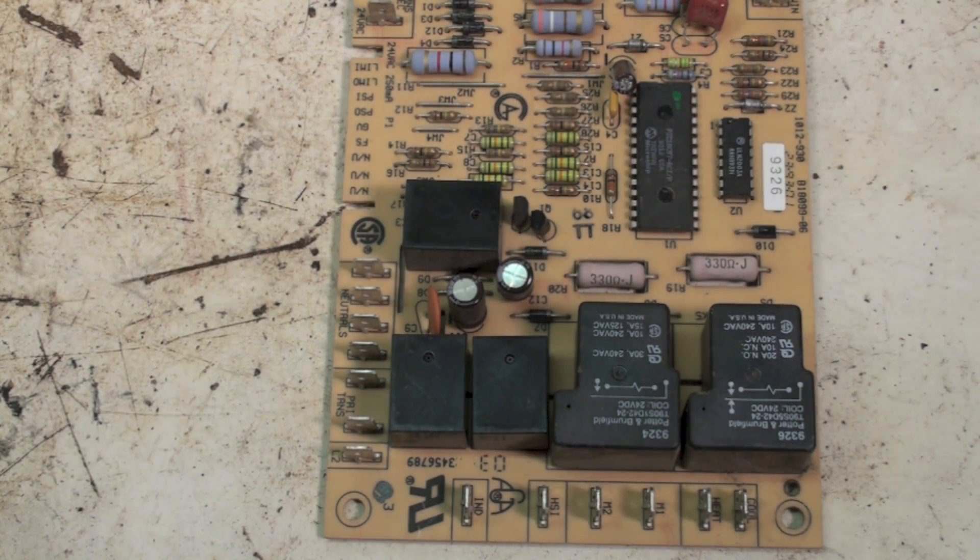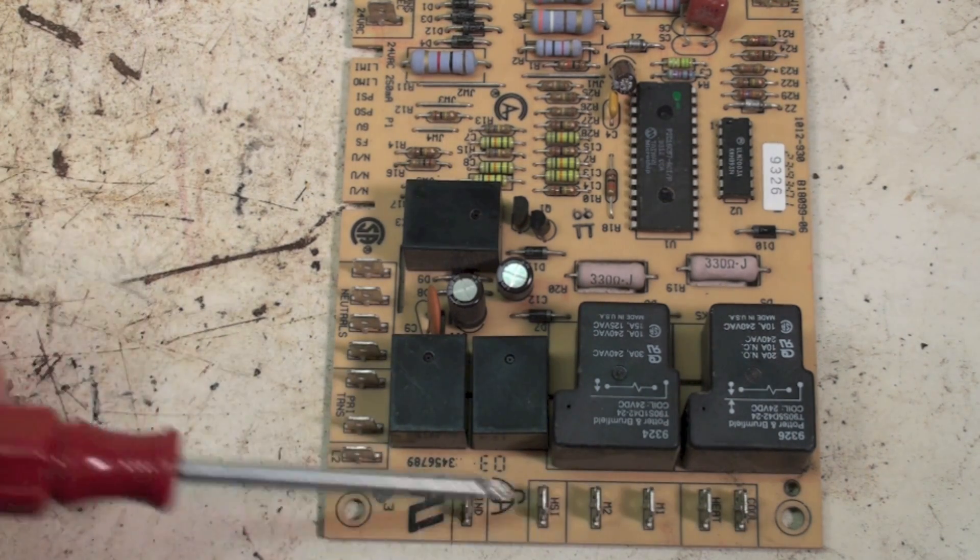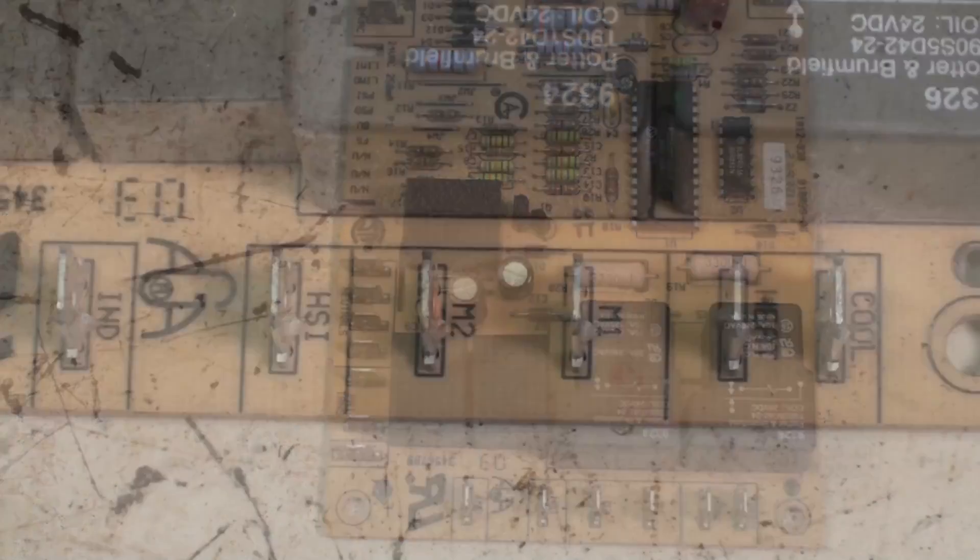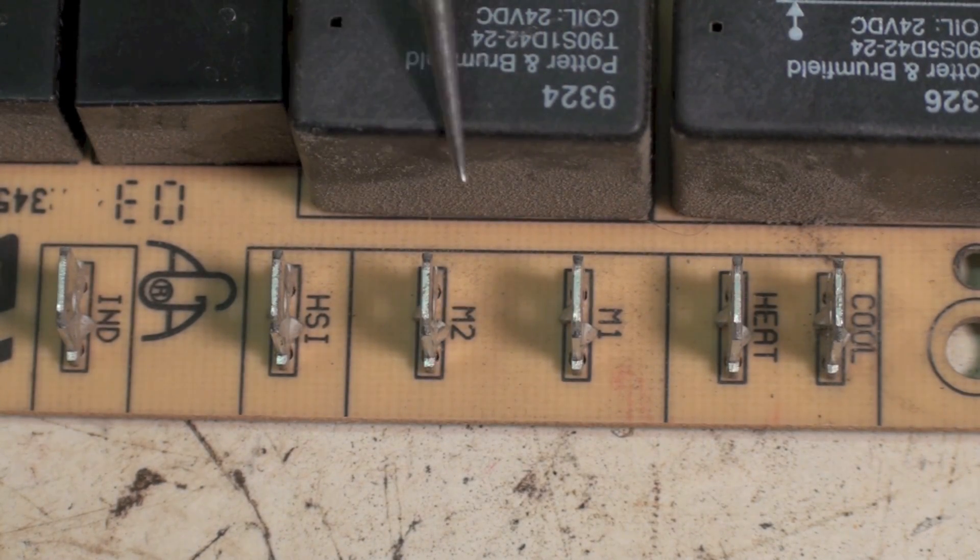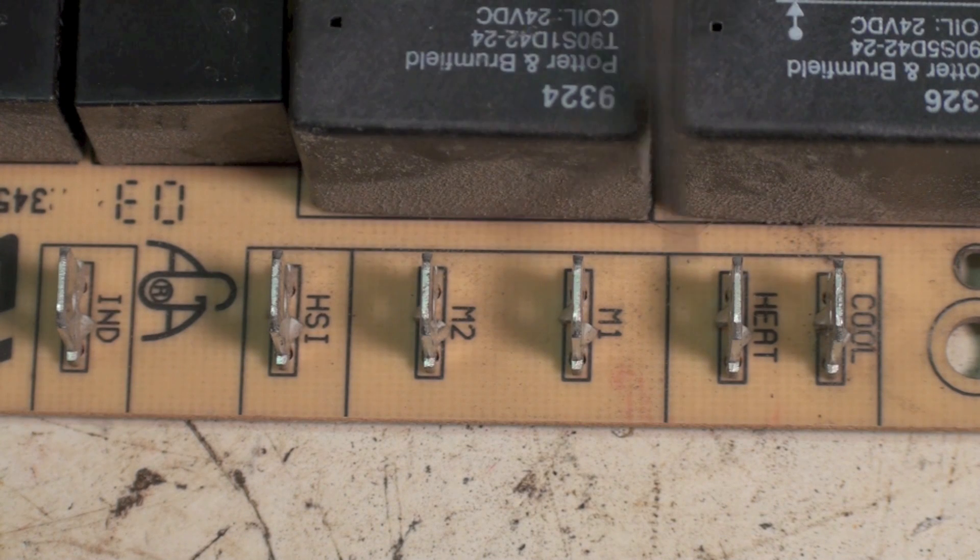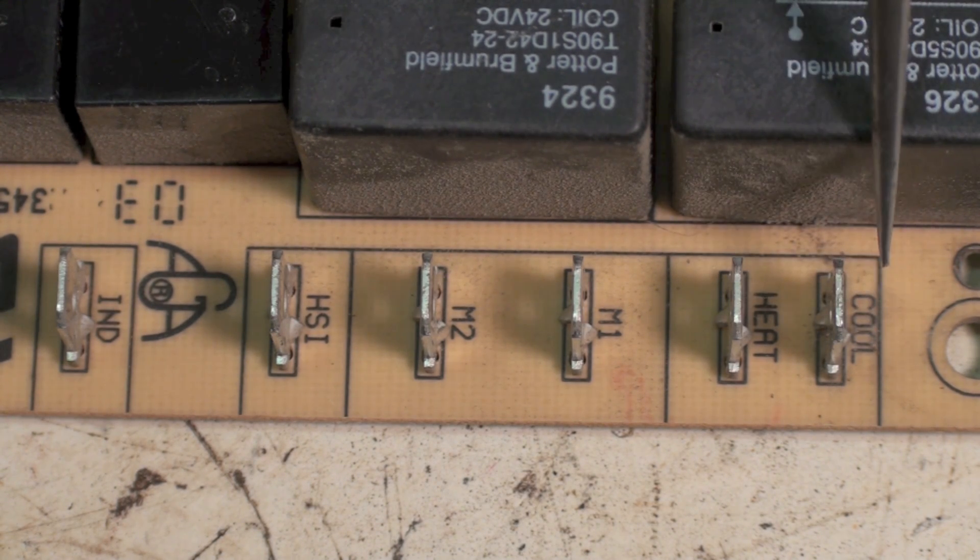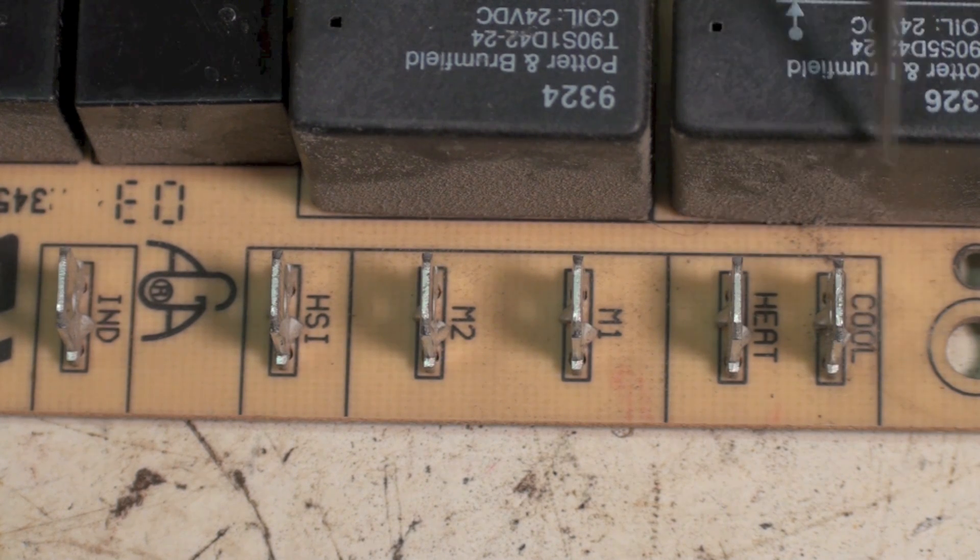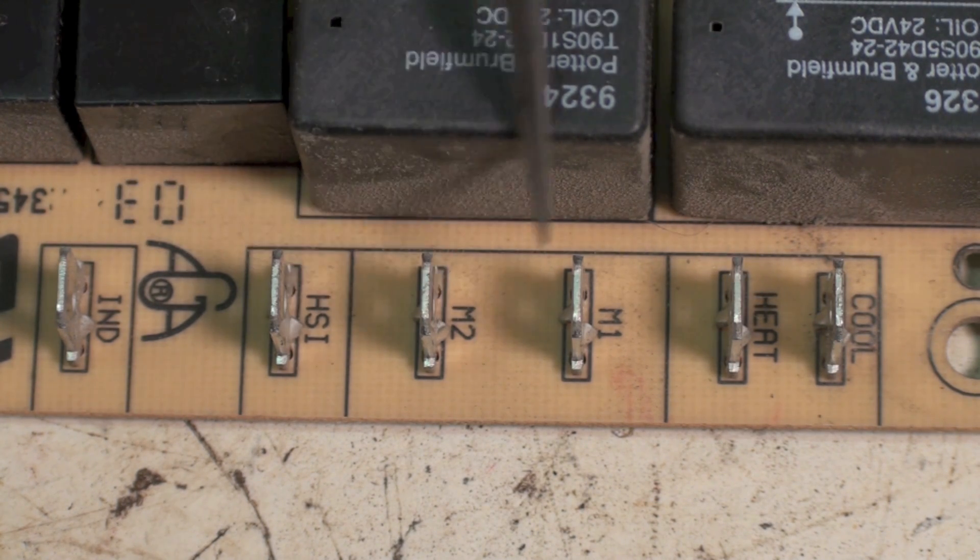The motor wires will probably be mounted along in here. This one says 'cool' on it, so that's a cooling speed. Cool is usually a higher speed than heat - not always but oftentimes. This is for heat. Now these two terminals called M1 and M2, they're not hooked to anything.